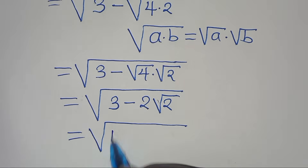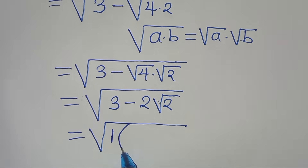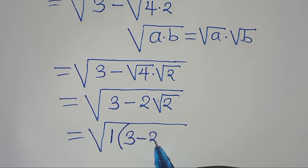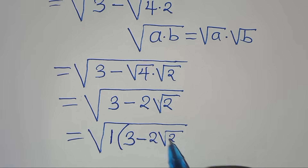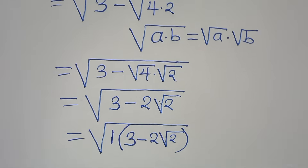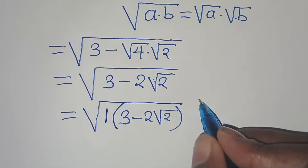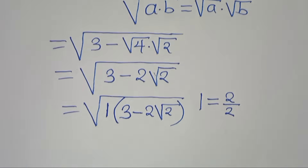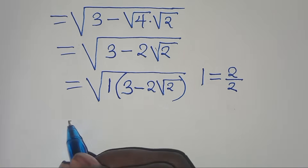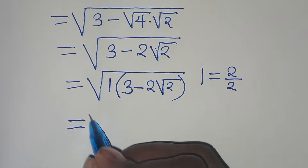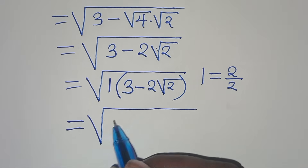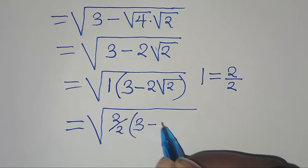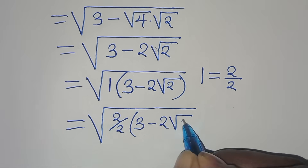We find that 1 is common here, so we can factor out 1, so that we have 1 into the parenthesis — this is 3 minus 2 square root of 2. Now we can express 1, this is the same thing as 2 over 2. And this implies that here we have the square root of 2 over 2, multiplied by 3 minus 2 square root of 2.